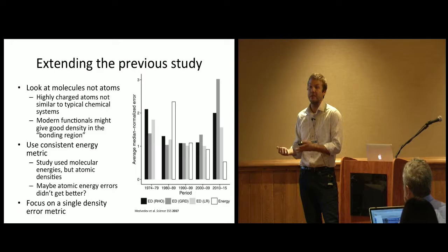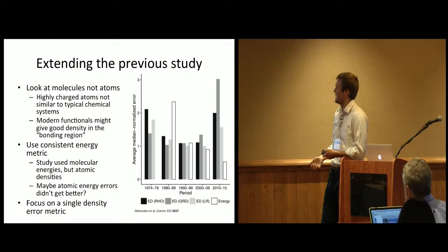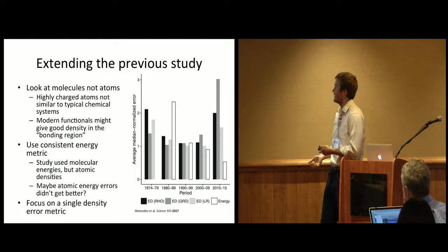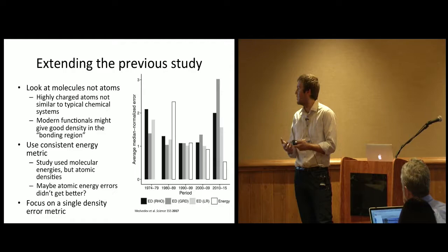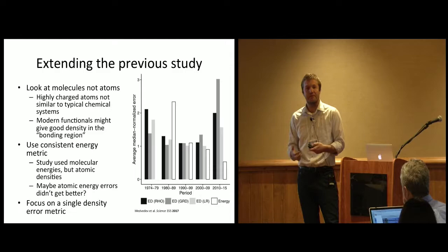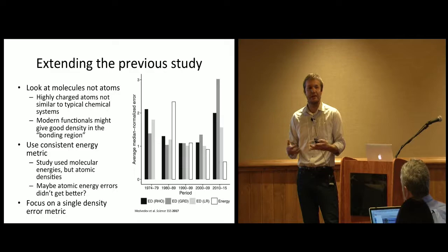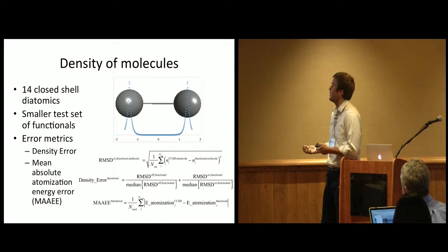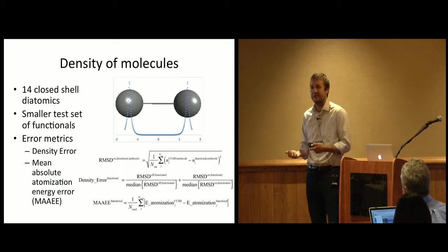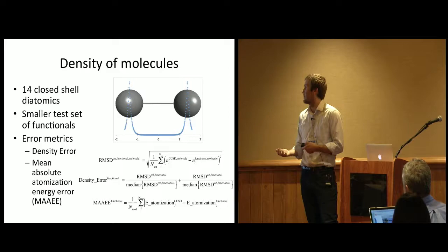We want to look at some molecules, and we want to look at energies for those molecules relative to the densities for those molecules. The last thing is we want to focus on a single density error metric. This is kind of a technical thing. This is a graph from the paper. They looked at a mixture of the density, the gradient of the density, and the Laplacian of the density, and then summed these together in an average. They had good reasons for that, but it's way simpler just to look at the density because all functionals use density as an input. We know if we get the exact density correct, we're going to get the gradient of the density and Laplacian of the density correct as well. So what did we actually do? We looked at 14 closed-shell diatomics. We used a smaller test set of functionals. I think we used about 100 different functionals.